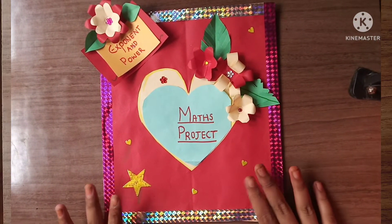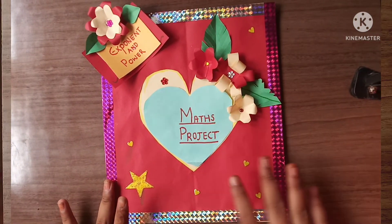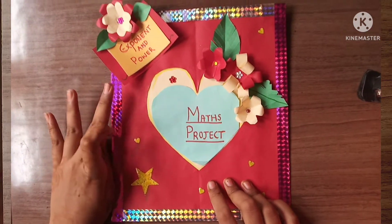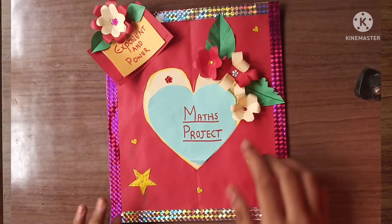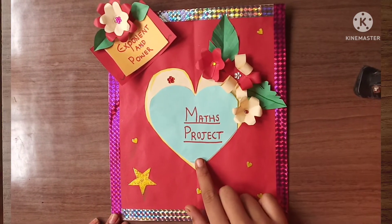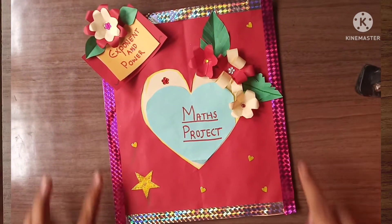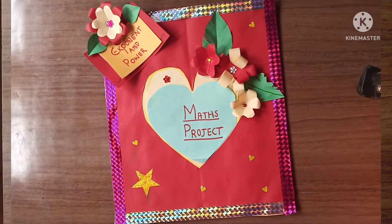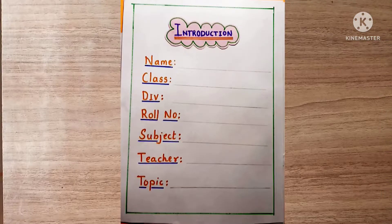I made it with a red color paper. Here I stuck a flower and here I wrote 'Exponent and Power'. Here I stuck some flowers and here I wrote 'Maths Project'. Here I stuck some stickers and a decorative tape at the edges.